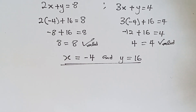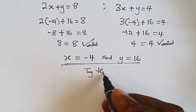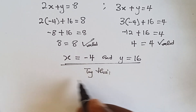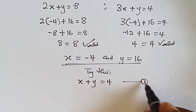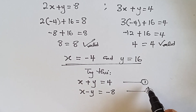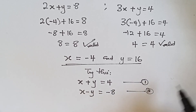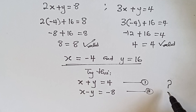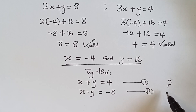Now let's try another one — solve this simultaneously using elimination method as well. We have x plus y equals to four as equation one, and x minus y equals to minus x as equation two. Solve this simultaneously using elimination method and drop your answer in the comment section. Thanks guys, don't forget to like, comment, and if you haven't subscribed to this channel please do subscribe. See you next time.